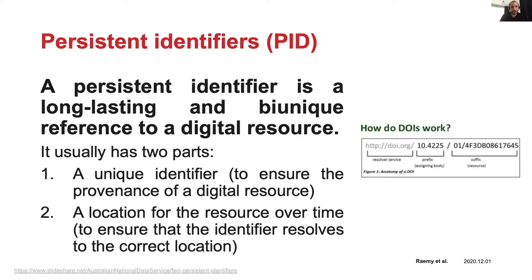If you take a look at the anatomy of the digital object identifier, there is a resolver service, a prefix which is a number consisting of 10, which is the handle as part of the DOI namespace, and the number of the assigning body. And finally, the third part, the suffix which identifies the resource.